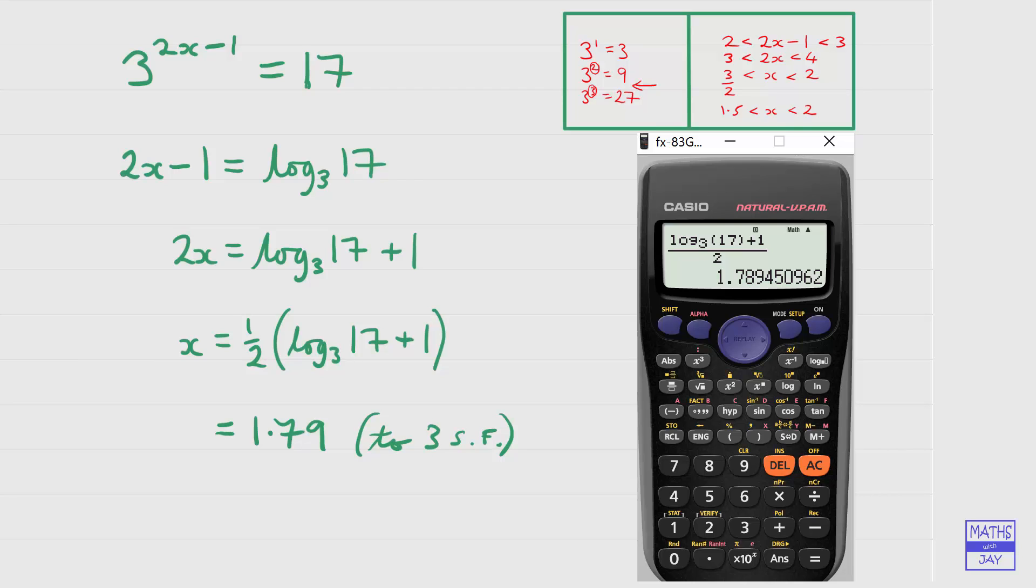And then we'll do the usual checks on our calculator. We'll want to check that the actual answer that we got on the calculator is correct, that should give us exactly the answer 17, and then we'll put in the answer 1.79 to check that we get approximately 17.